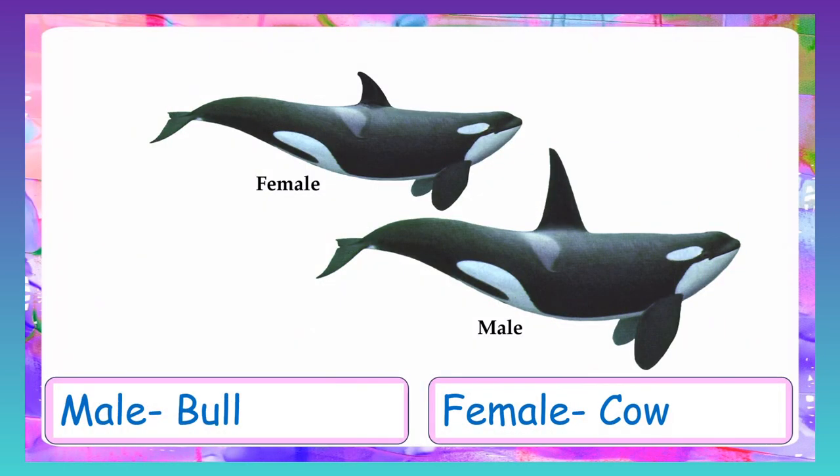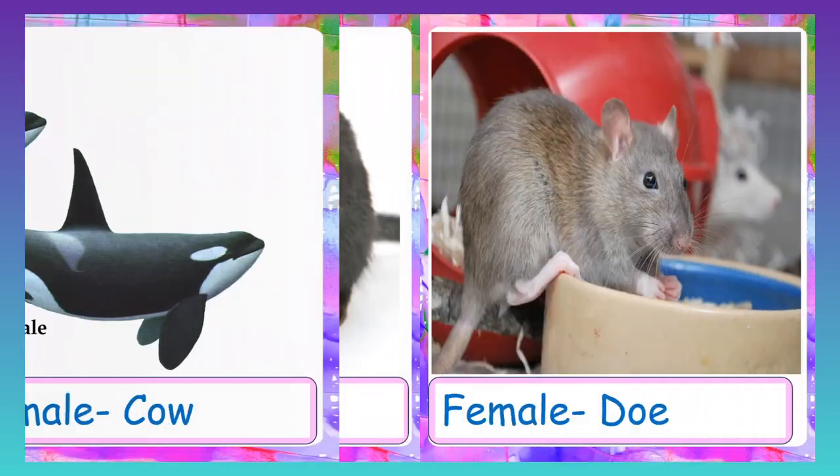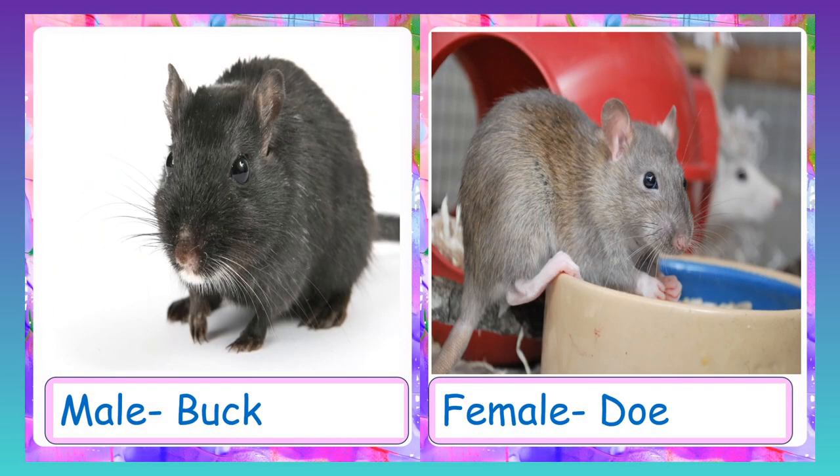Killer whale: male is called bull and female is called cow. Mouse: male is called buck and female is called doe.